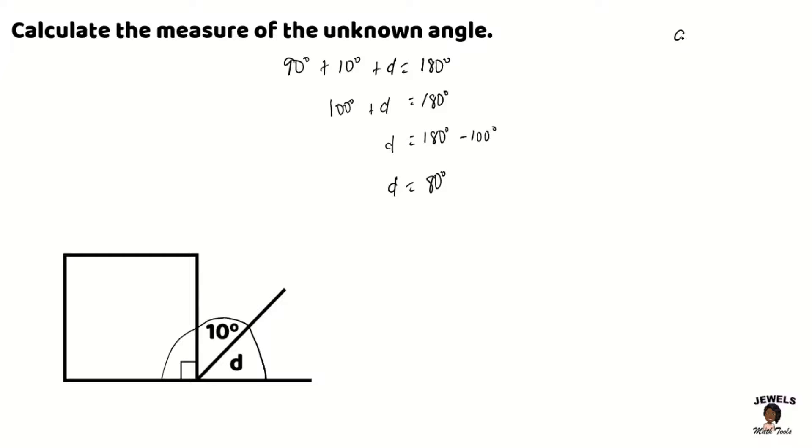And again, if you want to perform that extra check just to see if everything is correct, that is no problem. Remember to always perform your check if you feel you need it. So zero plus zero is zero. 9 plus 1 is 10, and 10 plus 8 is 18. So we checked our angles to see that our answer, D equals 80 degrees, is correct.